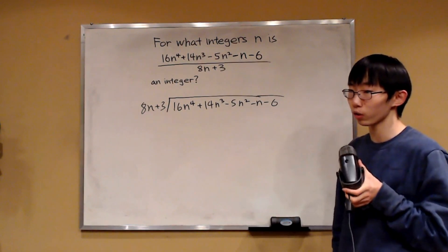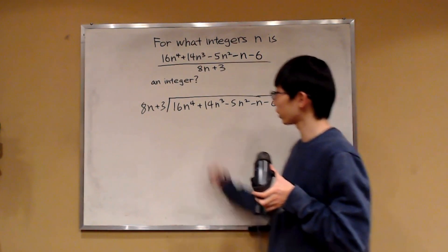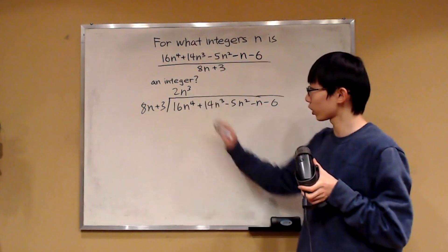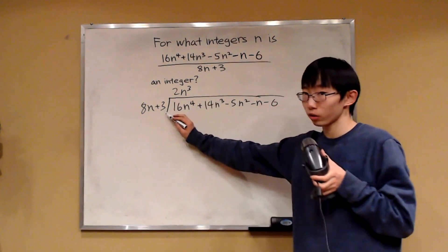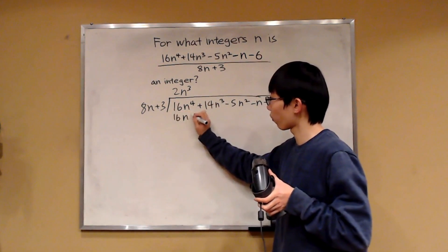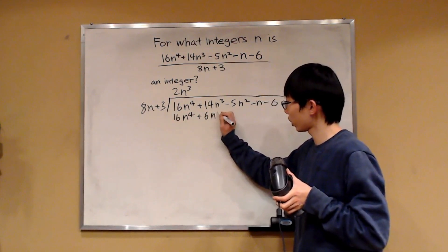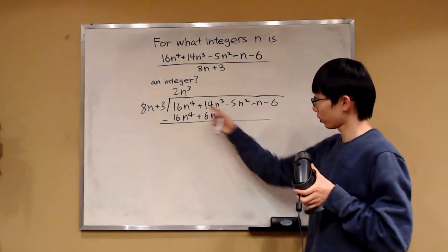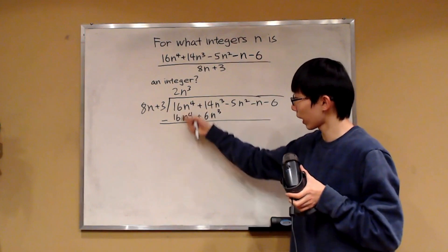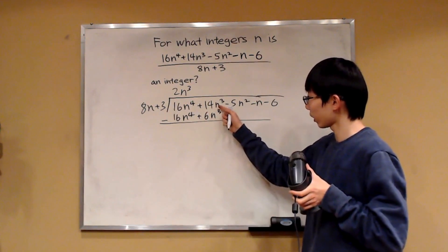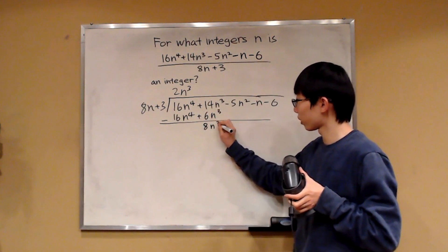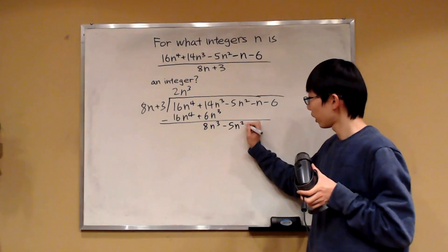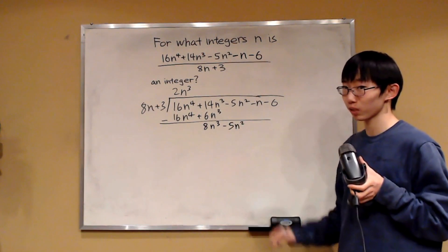The first term is going to be 2n cubed. The reason for this is, if you take 2n cubed and multiply it with the divisor polynomial, we get 16n⁴ plus 6n cubed. And then when we subtract, as per usual in division, the 16n⁴ terms cancel out, and we have the n cubed terms — that would be 8n cubed. And then we can drop this negative 5n squared from here and just repeat the process. Simple as that.